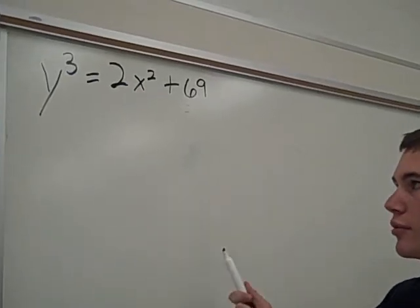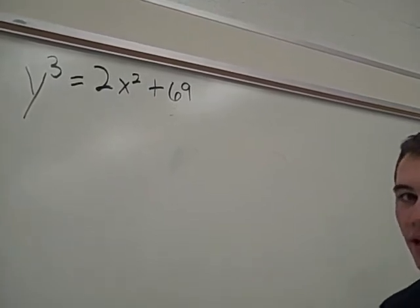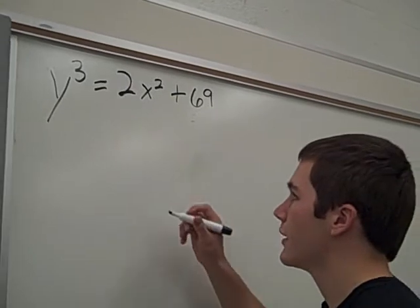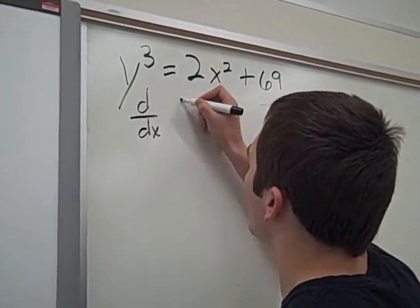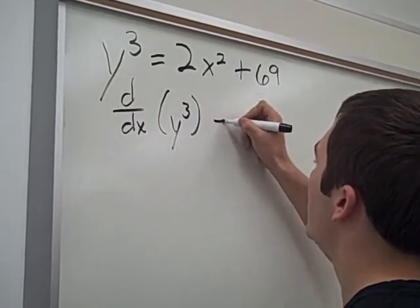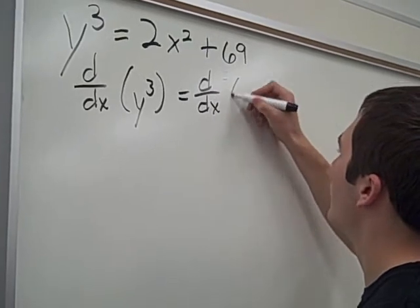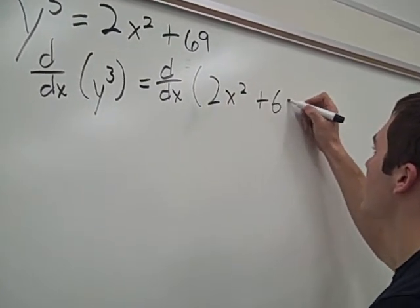Now we're going to learn how to do implicit differentiation, which is what you have to do whenever you can't get y by itself in an equation. So to start, you just take the derivative of both sides, so d over dx of y cubed equals d over dx of 2x squared plus 69.